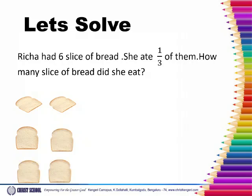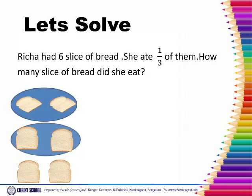She ate one by three of them. So what is the denominator here? Three. So we need to make three groups. Among the three groups, she ate one by three — that means among the three groups she ate from one group.